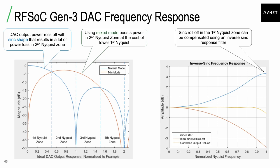As in all DACs, there is a sine x over x envelope in the analog domain at the output. There are various methods of boosting the frequency response — for example, in the second Nyquist zone there is something called mix mode that is applicable. All of these things impact the signal quality coming out of the DAC and into the analog domain.